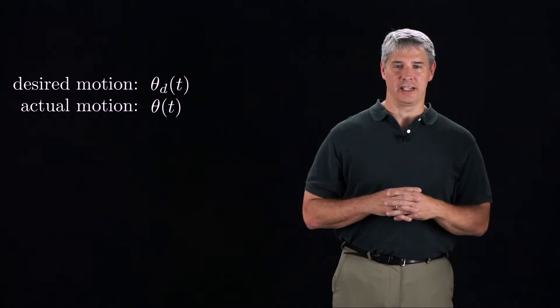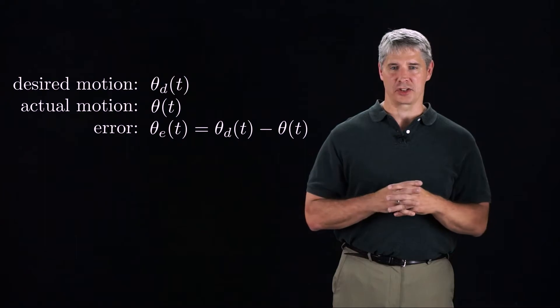The actual motion is theta. We define the error to be theta_e equal to theta_d minus theta. The error dynamics are the equations that describe the evolution of theta_e of the controlled system.